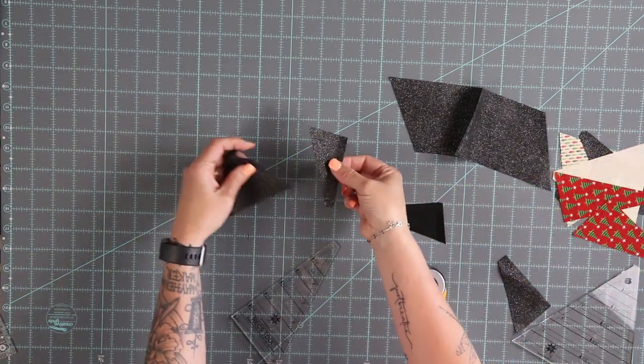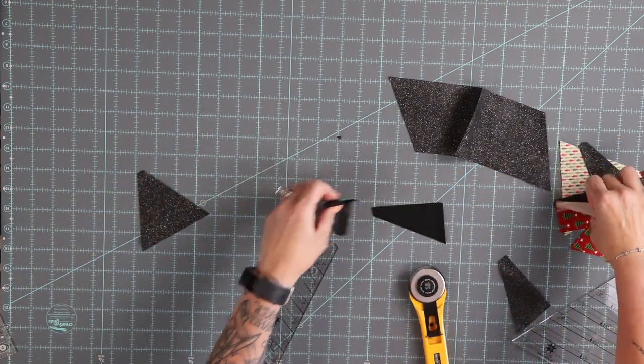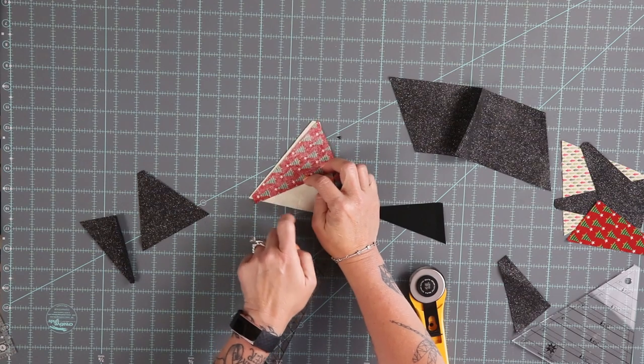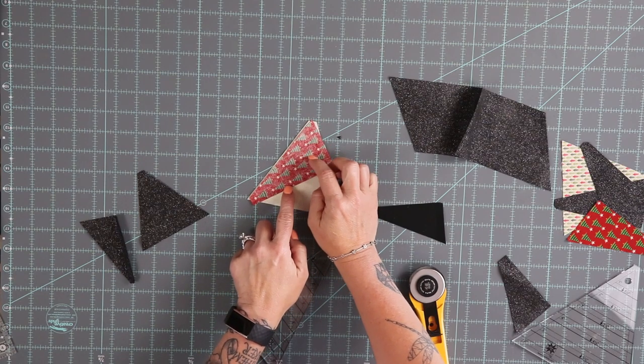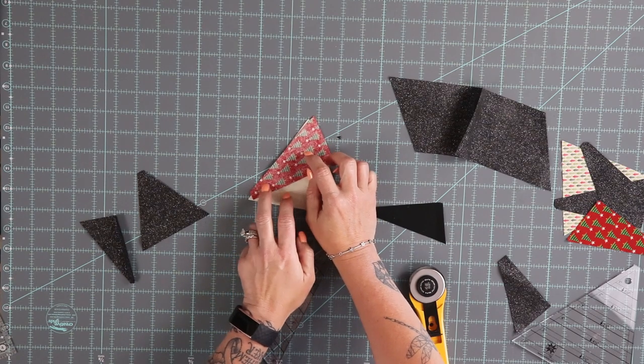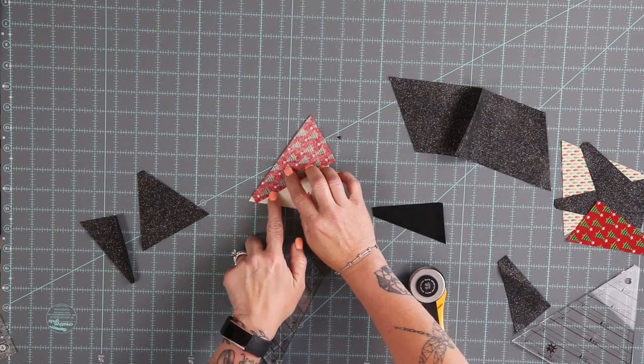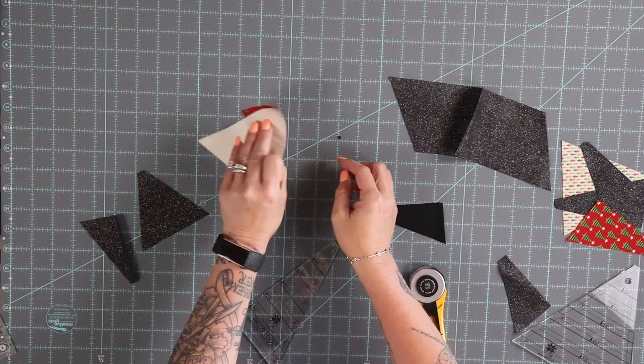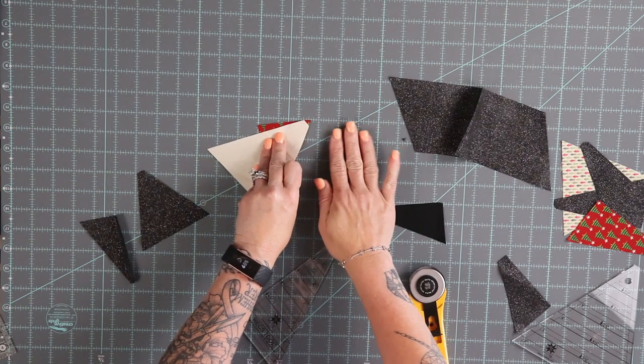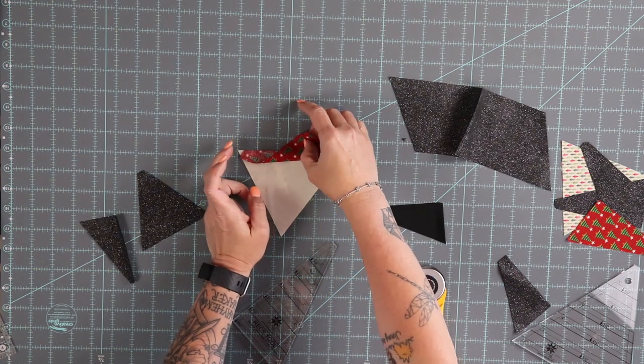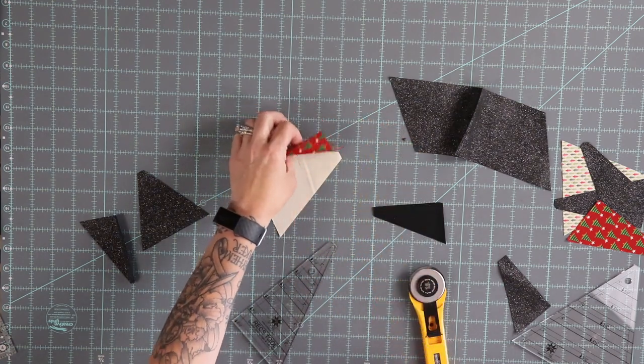So that when you do go to line things up everything has a notch. We're going to line it up so that it has what we call a dog ear here, and then if you looked at the other side you're going to have a dog ear on the other end. And then I'm going to take it to the machine, do my quarter inch seam, and we'll come back and show you what it looks like.